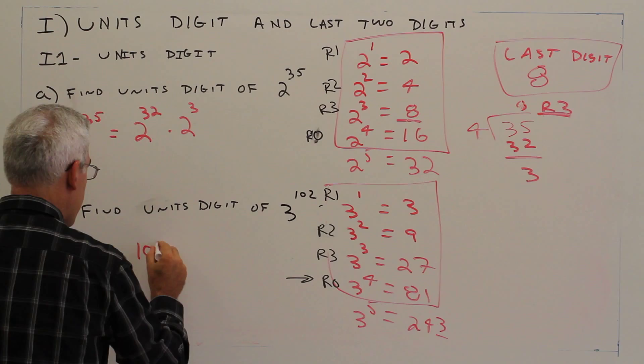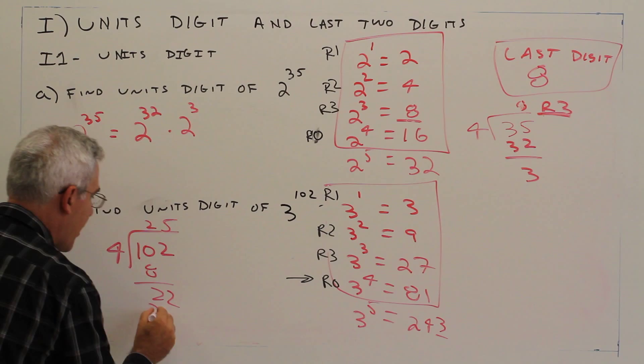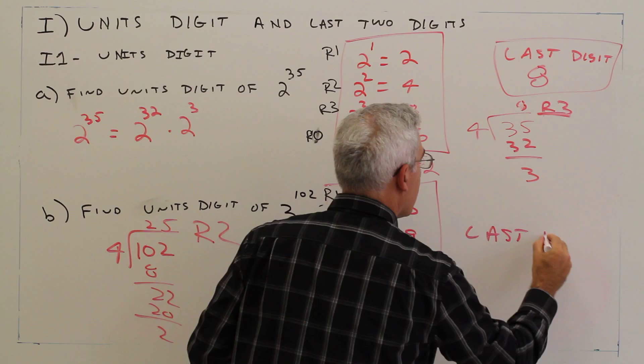So we'll just do it the division way. Okay, so 102 divided by 4 because it's a cycle of 4, so 4 goes into 10 twice, 8, 22, 5, 20, 25 remainder 2, remainder 2 corresponds to 9.